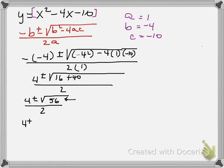which is 4 plus or minus 7.5, and all that's going to be divided by 2. So we have two potential answers. One is 4 plus 7.5 over 2...